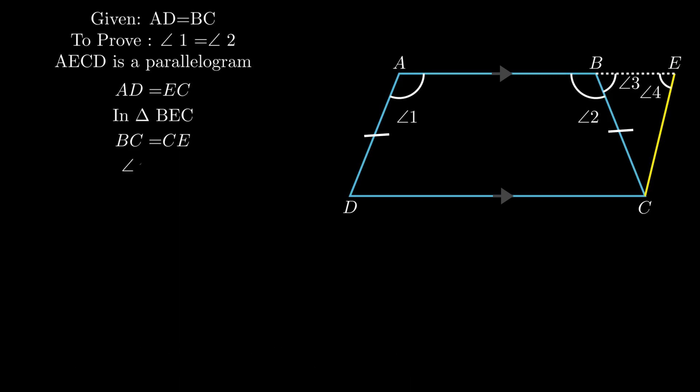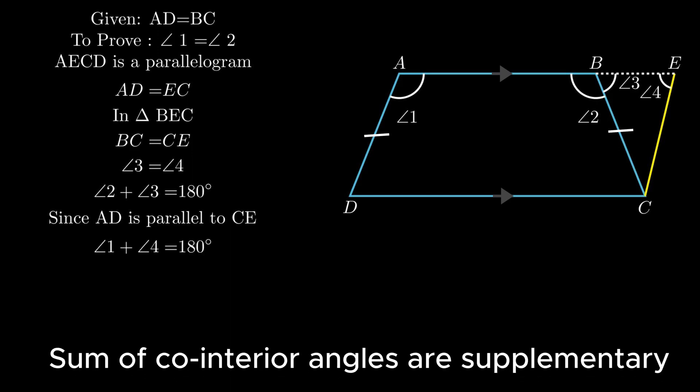As adjacent angles on a straight line form a linear pair, the sum of angle 2 and angle 3 equals 180 degrees. Since side AD is parallel to side CE, the sum of angle BAD and angle BEC equals 180 degrees, as the sum of co-interior angles are supplementary.